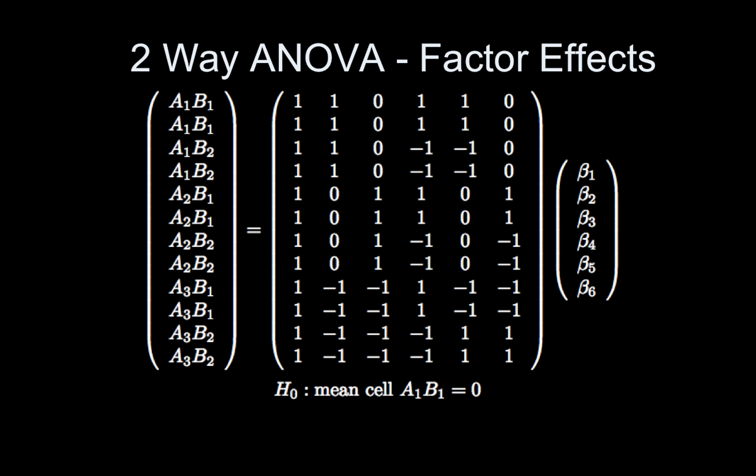Okay, and then what if you need just the mean for cell A1 B1? So your first patient group males. Again, you use the trick. Is each row of the design matrix identical for each subject in that cell? Yes. Then that's your contrast. So my contrast for A1 B1 is 1, 1, 0, 1, 1, 0. Likewise, if I wanted A3 B2, it would be 1, minus 1, minus 1, minus 1, 1, 1. Get it? So you just grab it from the row of the design matrix.